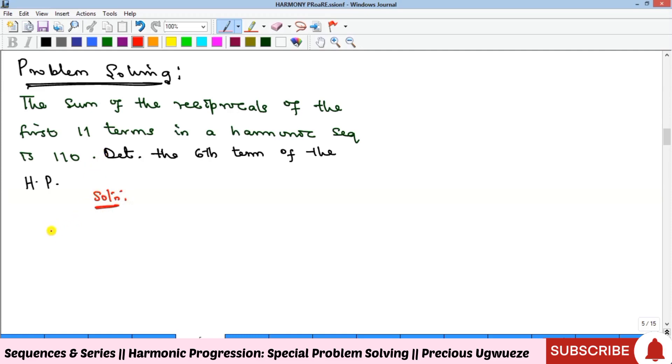The problem says: the sum of the reciprocals of the first 11 terms in a harmonic sequence is 110. We're asked to determine the sixth term of that harmonic sequence. So let's interpret what we're given.